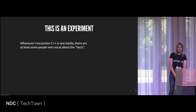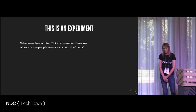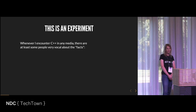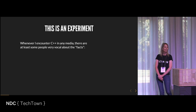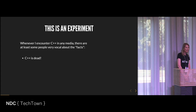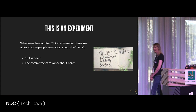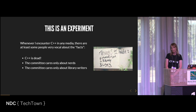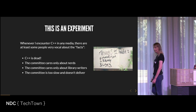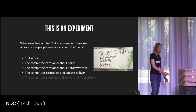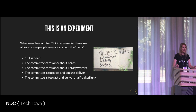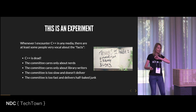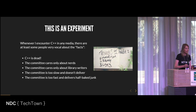Every time I go to social media and on the web there are some people who are really vocal about the current state of C++, with pretty strong opinions: C++ is dead, the committee is only about the nerds, it's only doing stuff for library writers, it's slow and doesn't deliver anything useful. Or: it's too fast, I can't keep up, and all what's coming out is just half done.